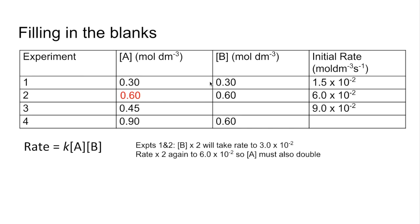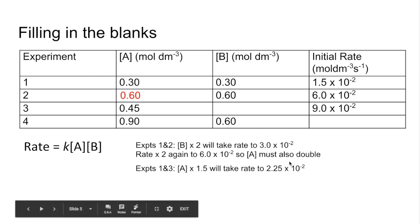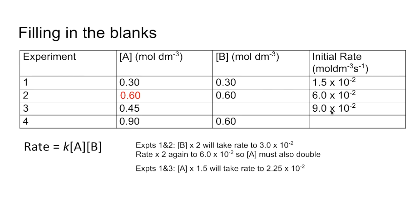For the next blank, B's concentration has gone up by a factor of 1.5, so that multiplies the rate by 1.5, taking it up to 2.25 times 10⁻². Then compare that intermediate rate with the actual rate — dividing the bigger by the smaller gives a four-fold increase. Since A is second order, a four-fold increase in rate means A has doubled, so the new concentration of A is 1.2.